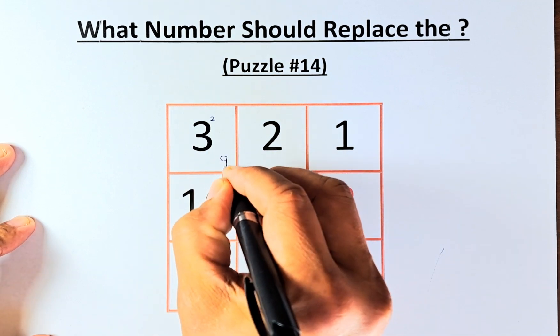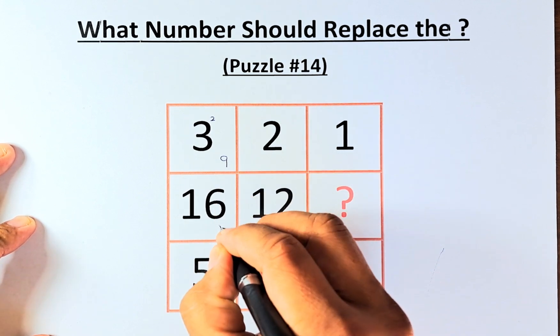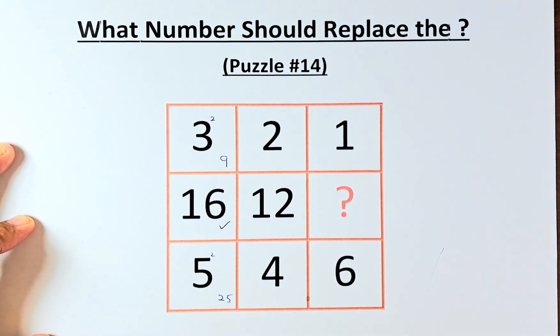So 3 squared is going to be 9, and 5 squared is 25. To get 16, we just take 25 minus 9, and that is 16. So similarly,